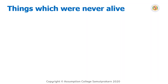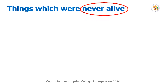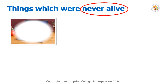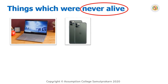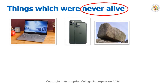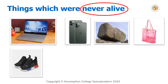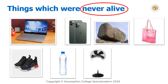Next, things which were never alive — they do not have life from the beginning. For example: a laptop, a mobile phone, a rock, a plastic bag, a sneaker, and a water bottle. These things are non-living things that were never alive.